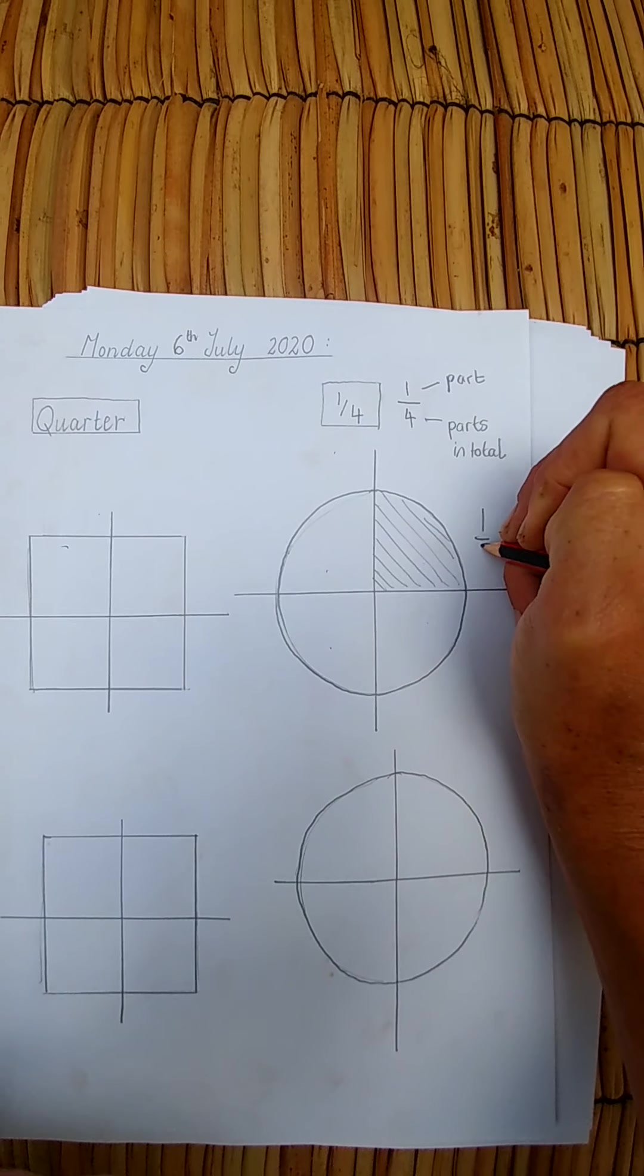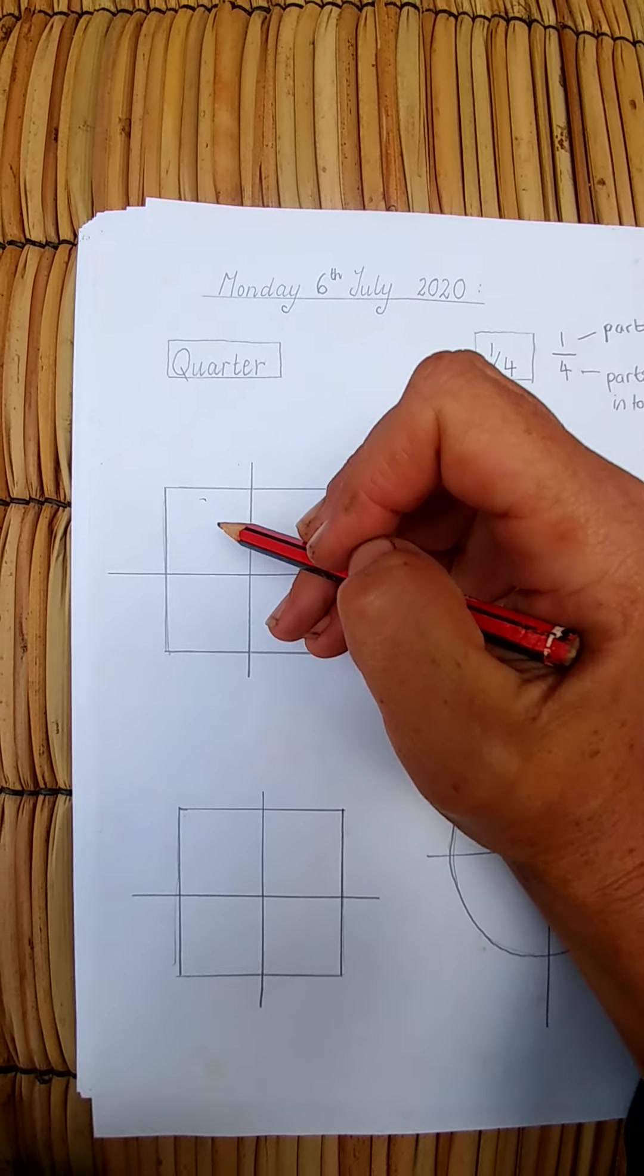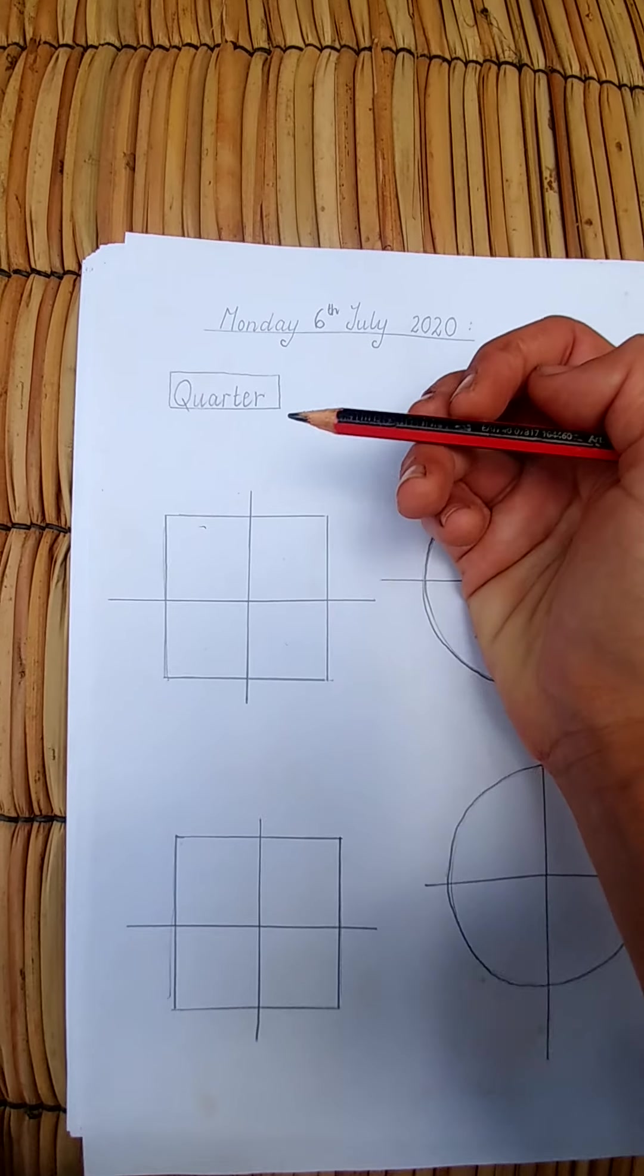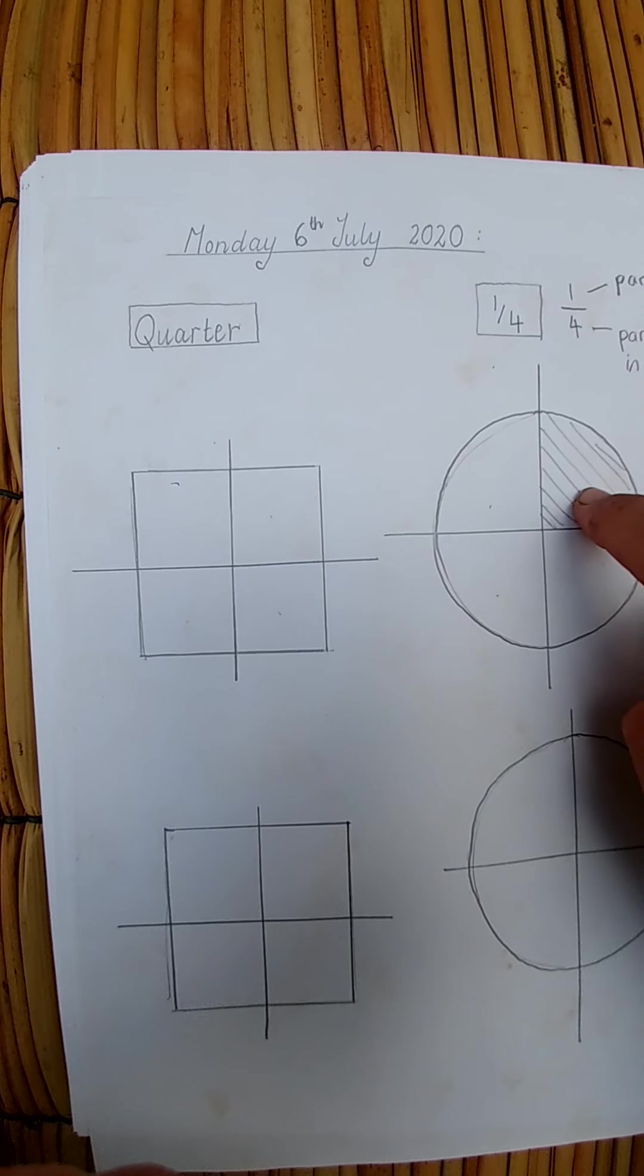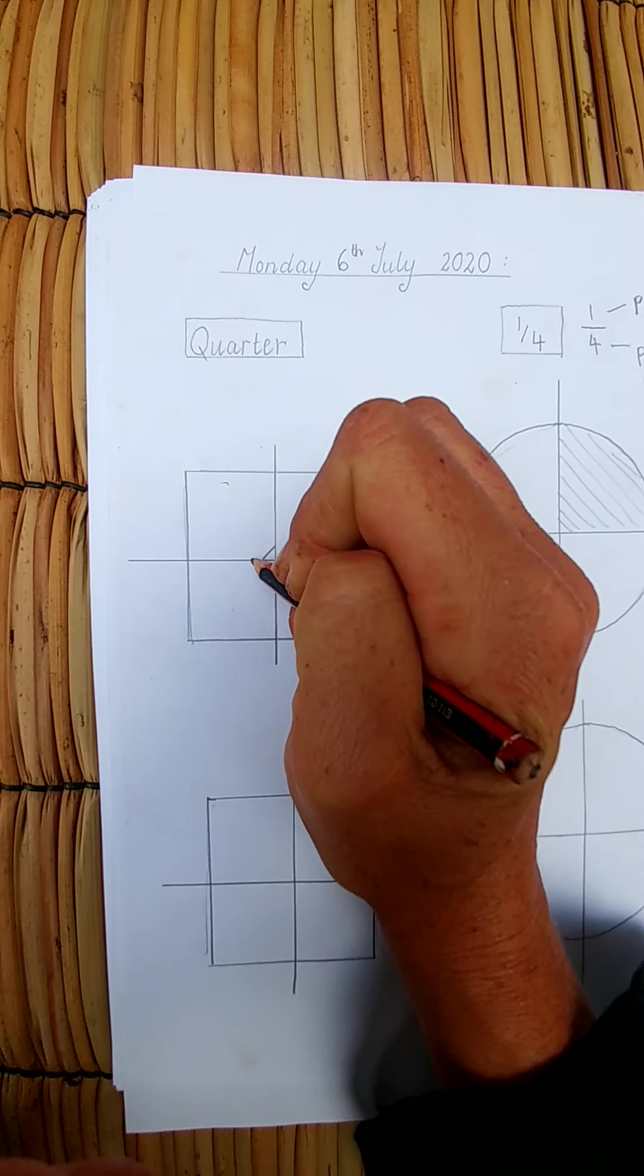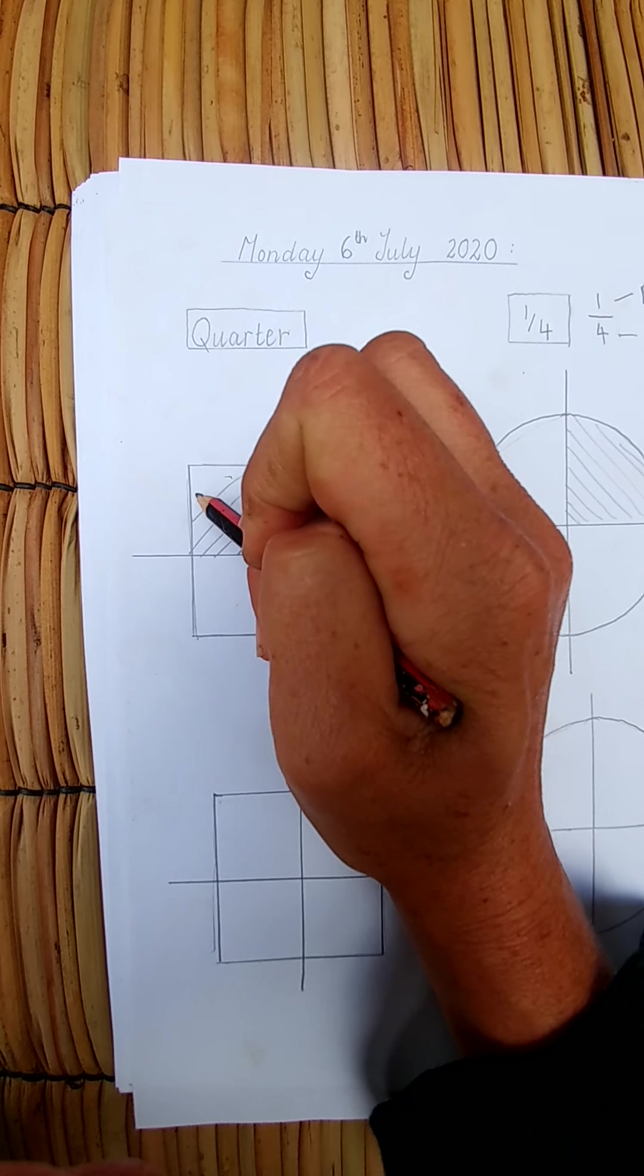The same thing in the square. I have four parts in total and I'm going to shade one quarter. It doesn't have to be the same quarter as the circle. I'm going to draw lines - you guys can do lines or color it in. This is one quarter of the square.